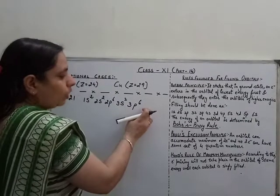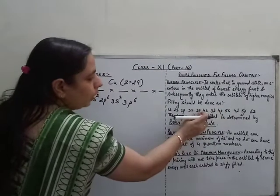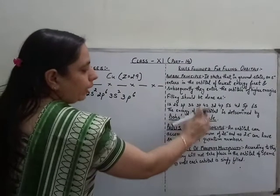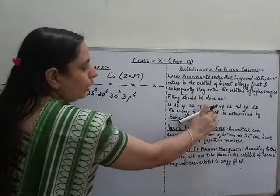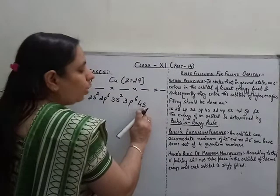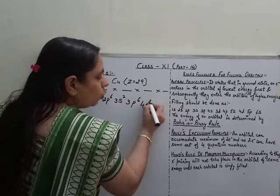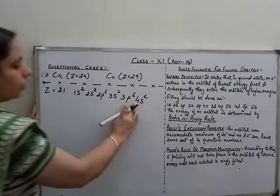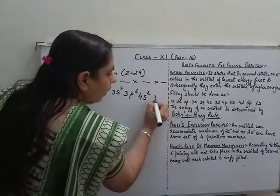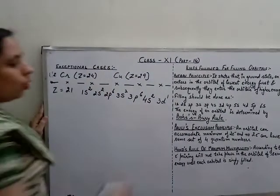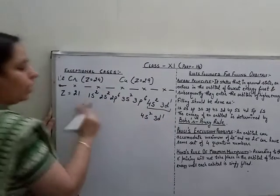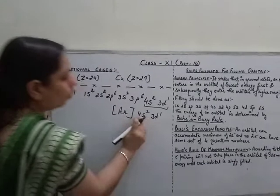Next, looking at the sequence, after 3p we would expect 3d since it is part of the third shell. But according to the Aufbau principle, electrons will enter the 4s orbital first and then 3d. Since 4s can hold 2 electrons, 2 more electrons are accommodated. We are left with 1 electron, which enters the d sub-shell as 3d1. So its electronic configuration is 4s2, 3d1, which we write as [Ar] 4s2 3d1.